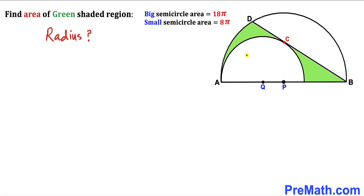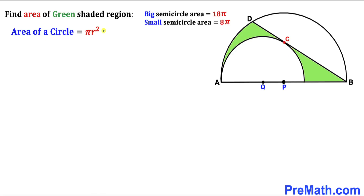Let's go ahead and calculate the radius of both the larger and smaller semicircles. Recall the area of a circle formula: area equals pi r squared. Let's focus on the big semicircle first. Its area has been given as 18π, and since we are dealing with a semicircle, we divide pi r squared by 2.